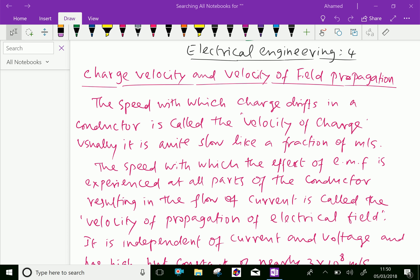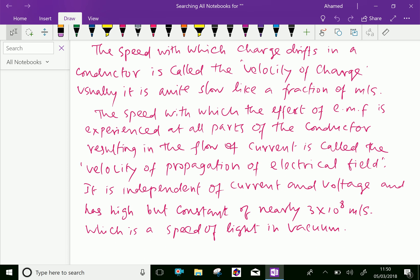The speed with which charge drifts in a conductor is called the velocity of charge. Usually it is quite slow, like a fraction of meter per second. The speed with which the effect of EMF is experienced at all parts of the conductor resulting in the flow of current is called the velocity of propagation of electrical field.